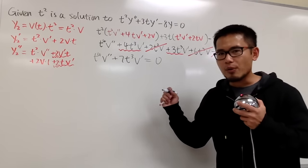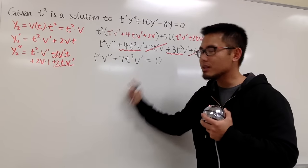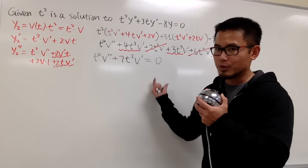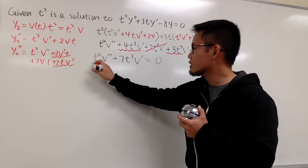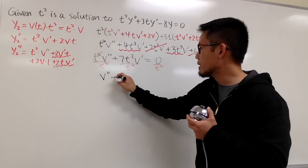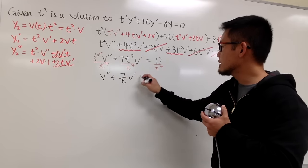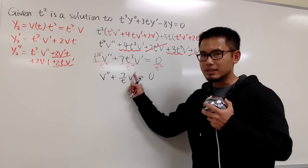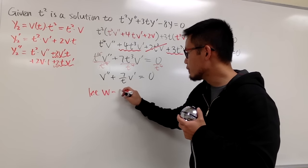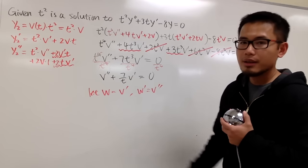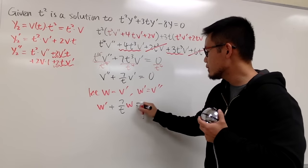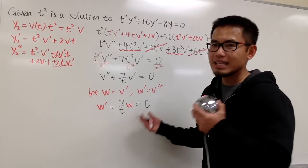From here, we only have the first and second derivatives, not the original φ. So we divide everything by t to the fourth power, giving φ double prime plus 7 over t·φ prime equals 0. We do a substitution: let w equal φ prime, so w prime equals φ double prime. This becomes w prime plus 7 over t times w equals 0, which we can solve by separating variables.